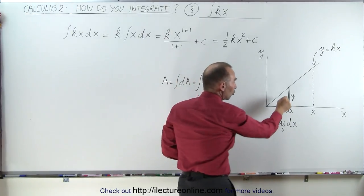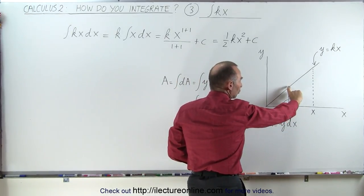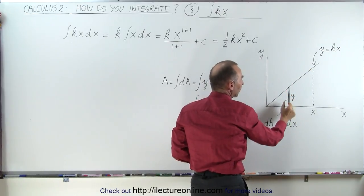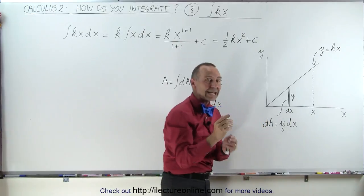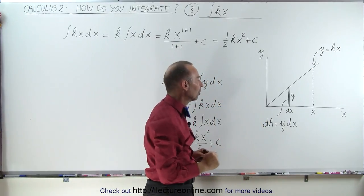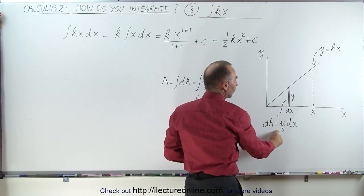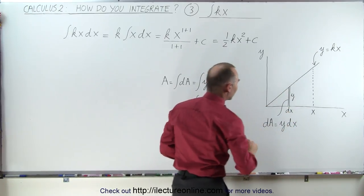And then we draw a little sliver right here, where the height is equal to y, the distance from the x-axis to the function y equals kx, and the width is a very tiny dx, a very small change in x. So the small little area here called dA is equal to the height times the width, y times dx.